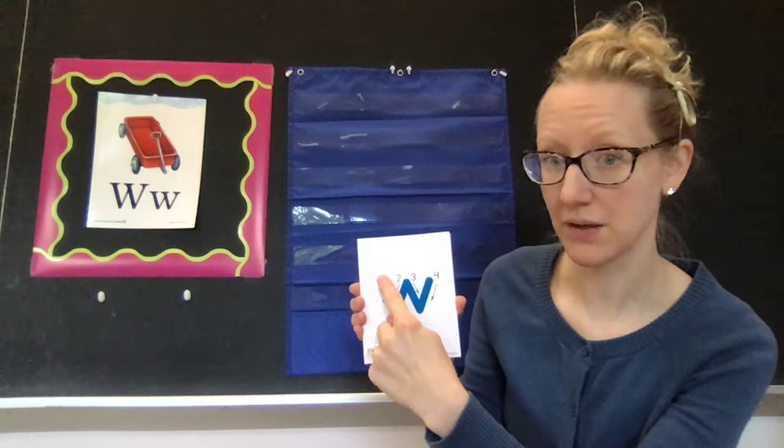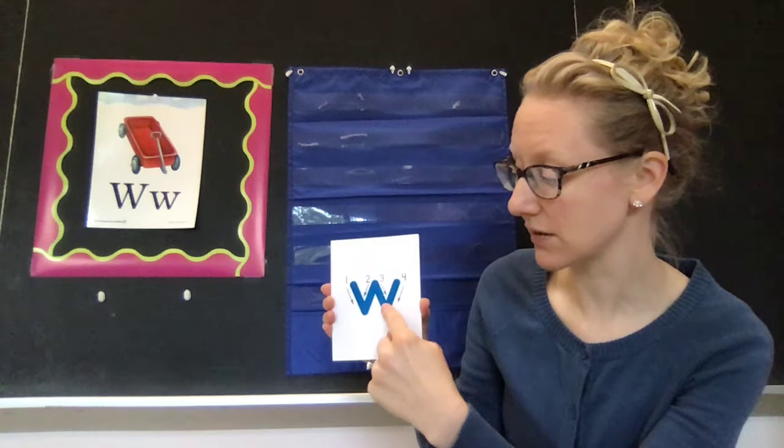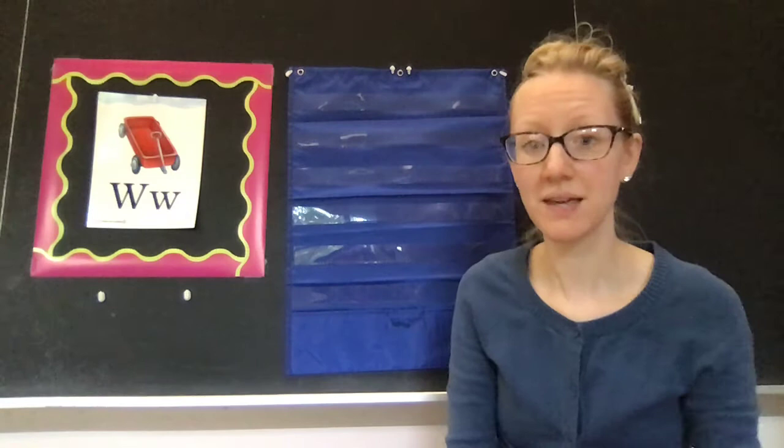To make a lowercase w, you make the exact same thing except it's smaller. You'll start in the middle of your lines. Starting in the middle, go down to the bottom line. Slant down, slant back up to the middle, back down to the bottom, and back up to the middle. Let's try this one in the air. Do the same thing as you did for capital, just make it smaller. Ready? Down, up, down, up. Last one. Down, up, down, up.